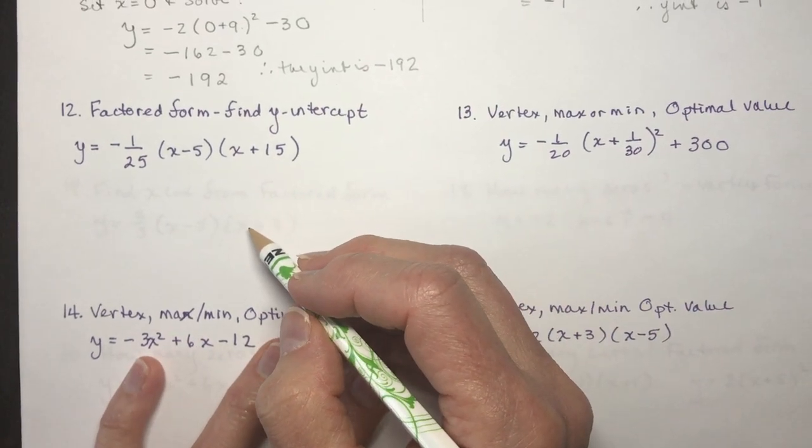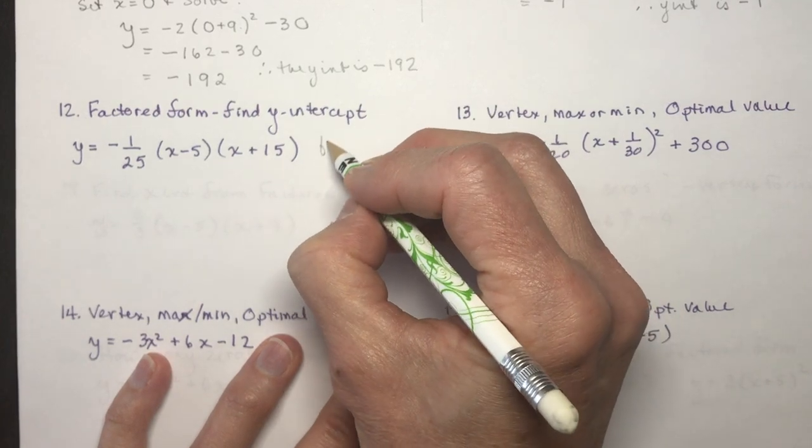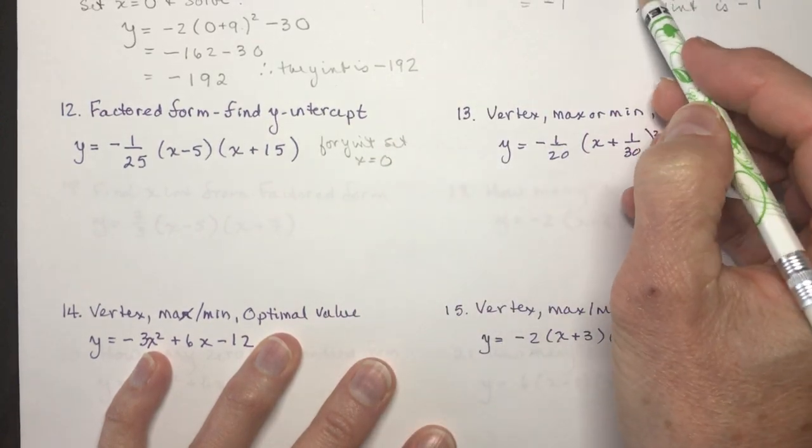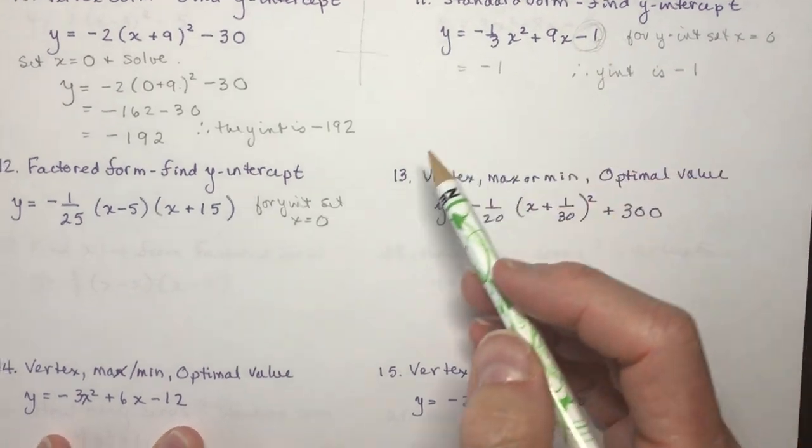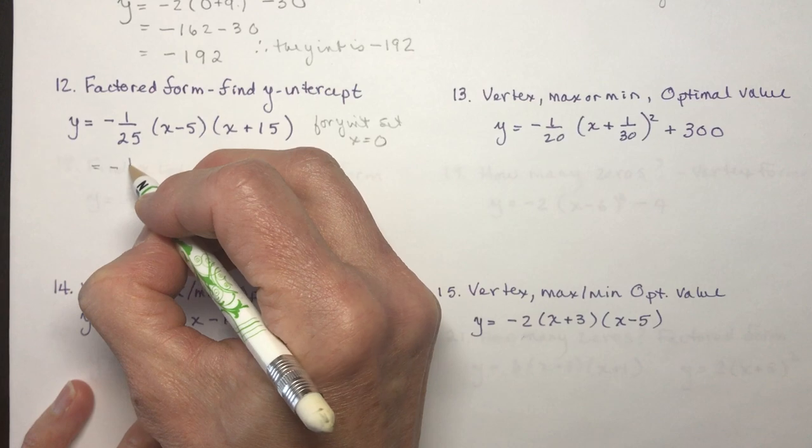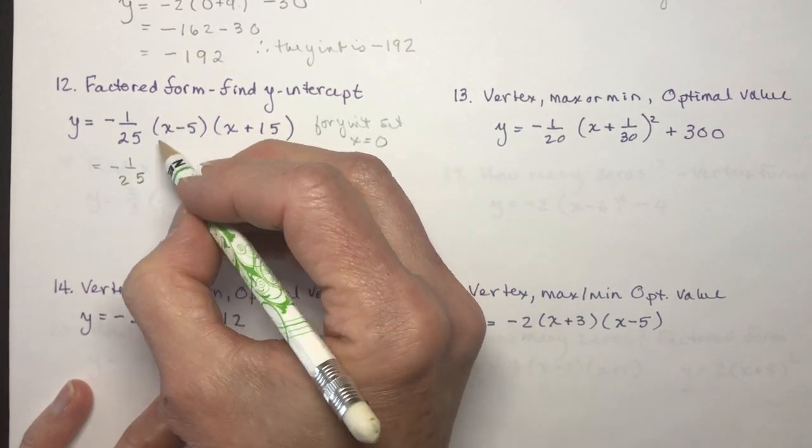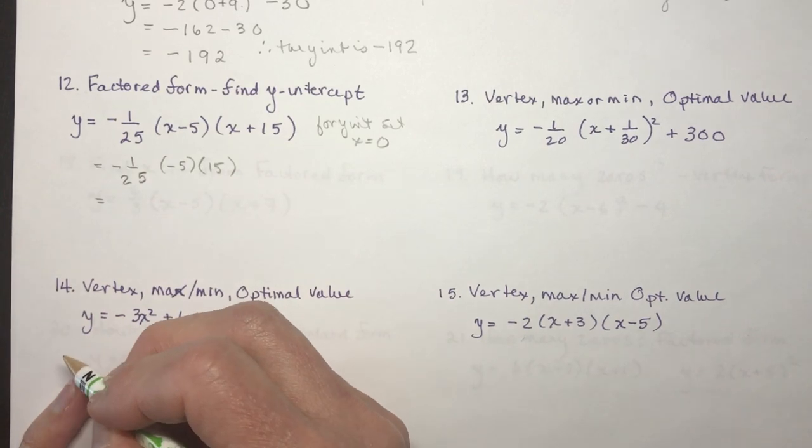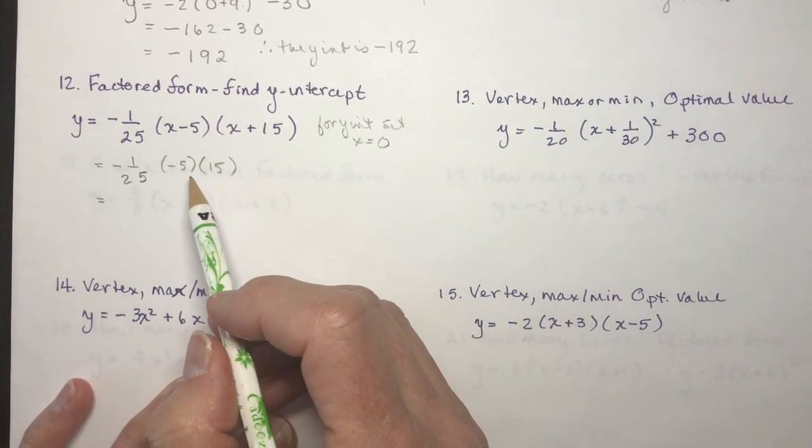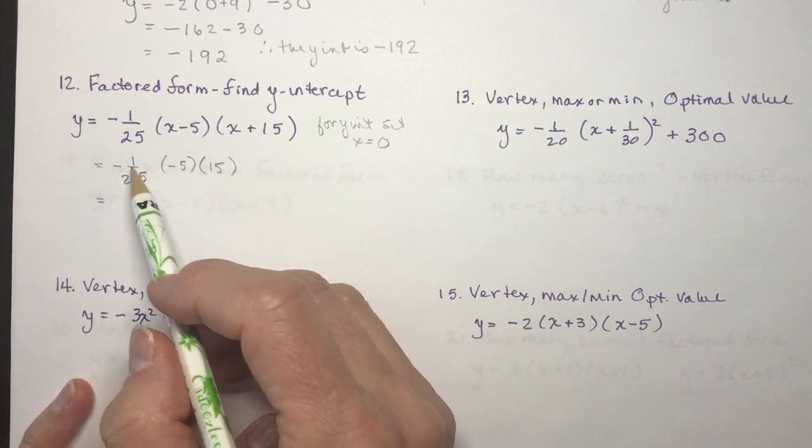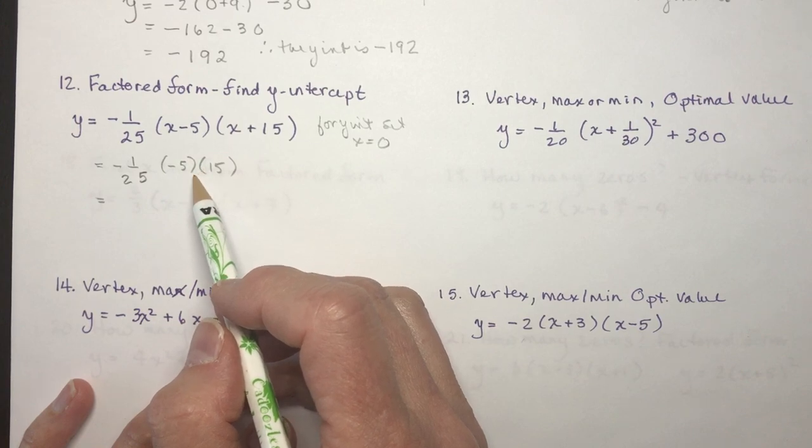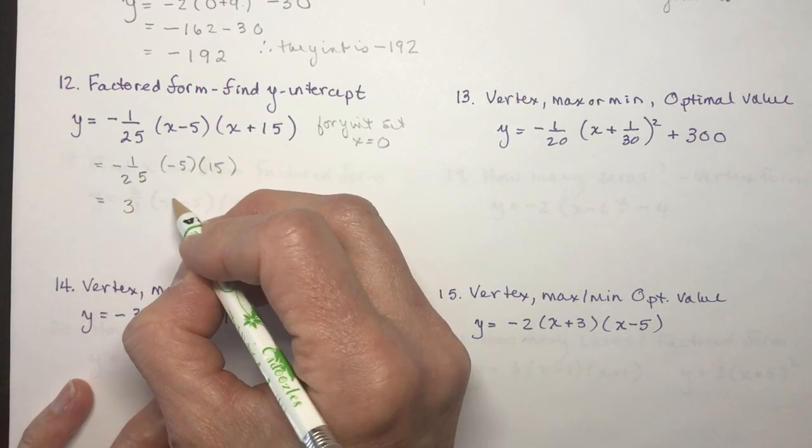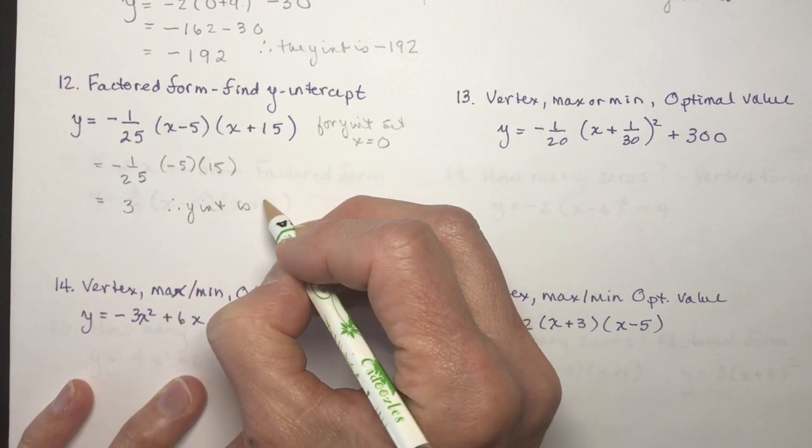If you're in the factored form, how do you find a y-intercept? Same thing again. For y-intercept, set x equal to zero. Standard form is the best one because it's just right there. In factored form, though, I have to plug in. So I'm going to plug in x is zero. I'm going to have minus 5 here times 15. Minus 5 times 15, that's 75, and that would be negative. This one is negative, this one's positive, so negative divided by negative is positive. We're going to get 3. Y-intercept is 3.